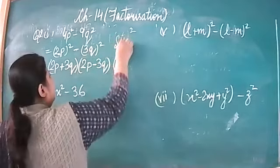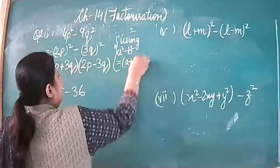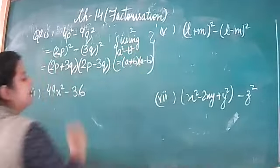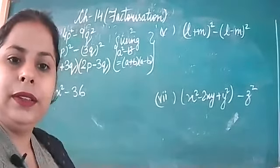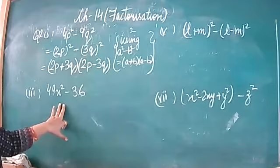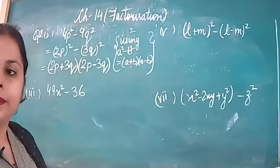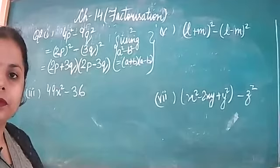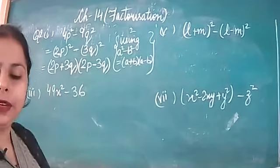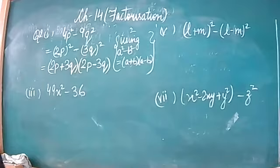Using the identity a squared minus b squared equals (a plus b)(a minus b), you have to write that identity here. Now the next one you can try yourself — try it in 2 minutes.